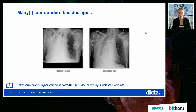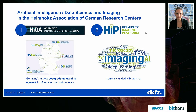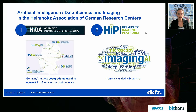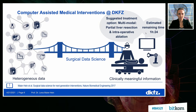I think Helmholtz did really well recognizing this. Helmholtz is Germany's largest scientific organization, looking at grand societal challenges such as climate and cancer. Today I'm talking on behalf of two large initiatives: HIDA, which has a large postgraduate training network for the AI part, and HIP for imaging. Personally, I'm a department head at the German Cancer Research Center. My core research is about improving interventional healthcare, specifically surgery, with data-driven methods, with a focus on imaging techniques.